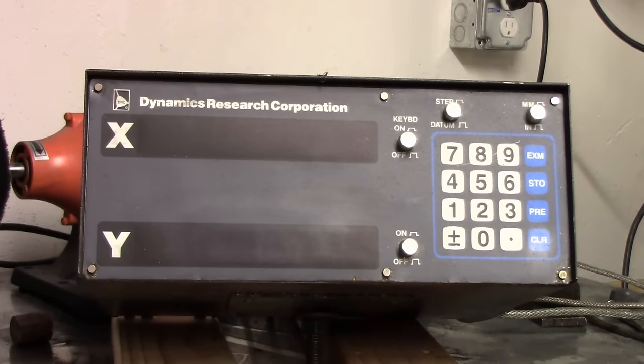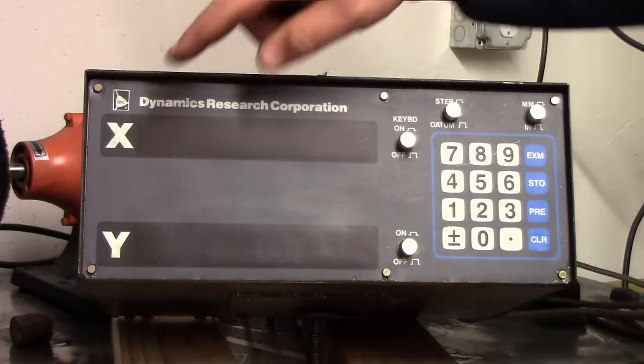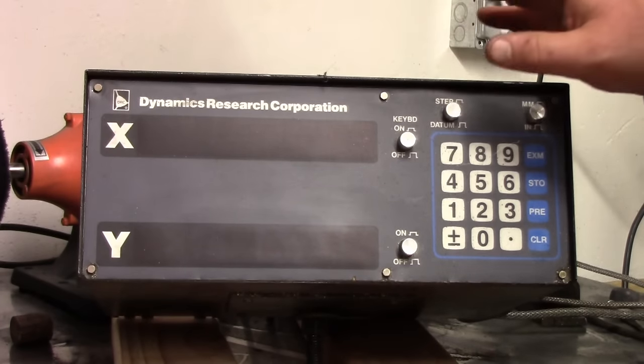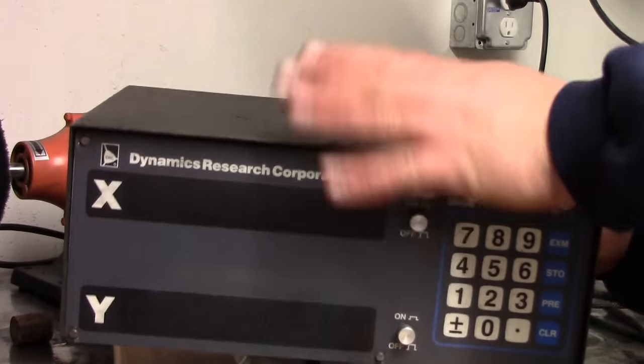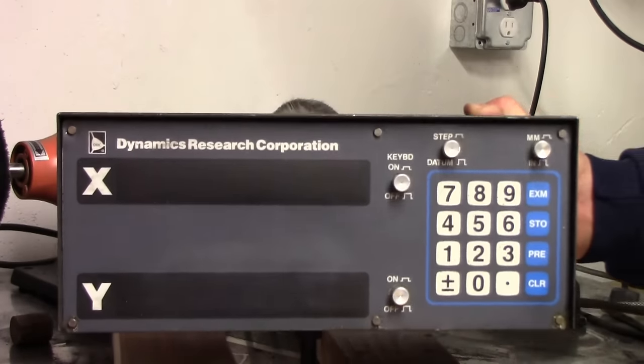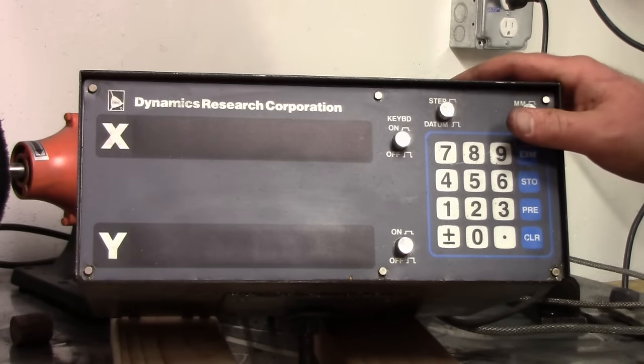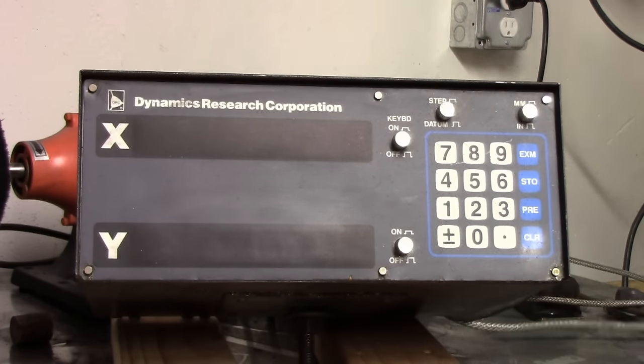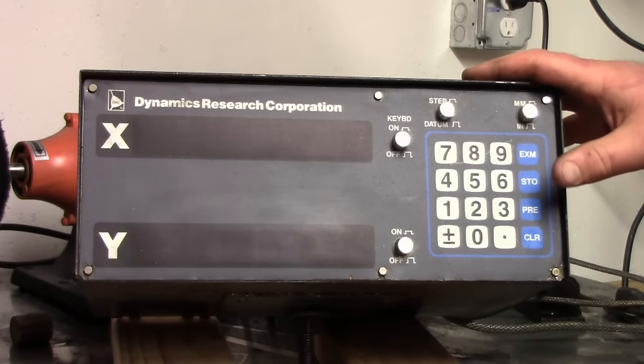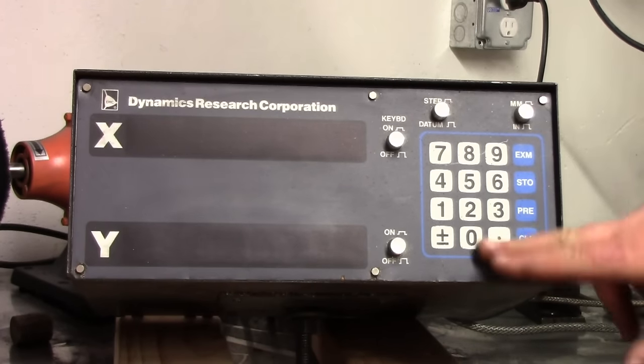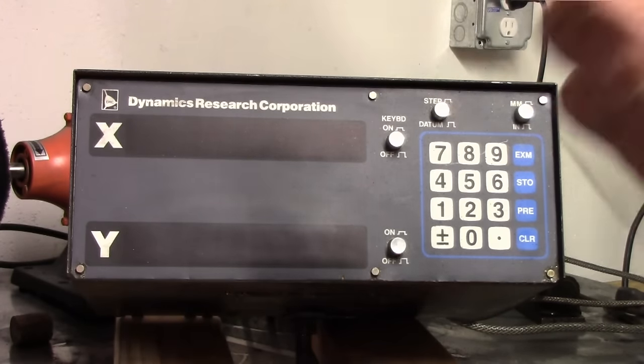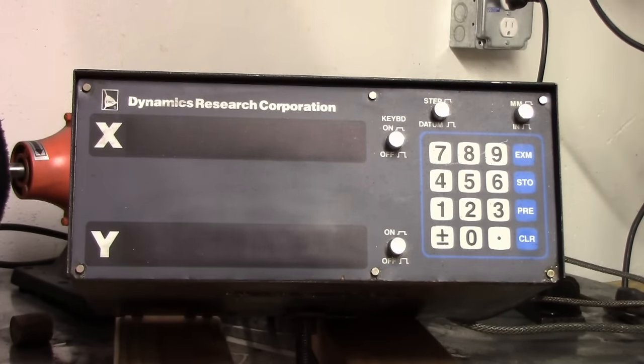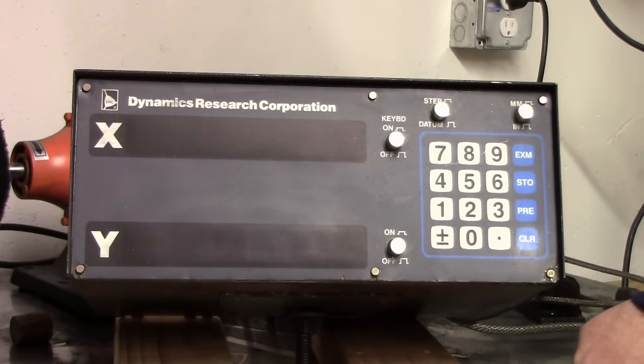Alright, so testing out the DRO here. I got the scales hooked up. This unit, Dynamic Research Corporation - actually, they're out of Massachusetts and they still exist. Wilmington, Mass., which actually is not too far from here. I did some research on this and I can't find any kind of manual online. I'd like to get one just to see what the functions are. I mean, granted, this is going to be relatively limited, but I'm pretty sure you can be able to store like an origin line in there, and I want to know what these buttons do.